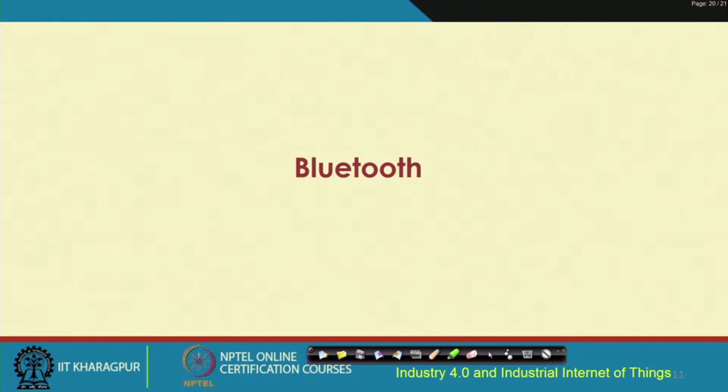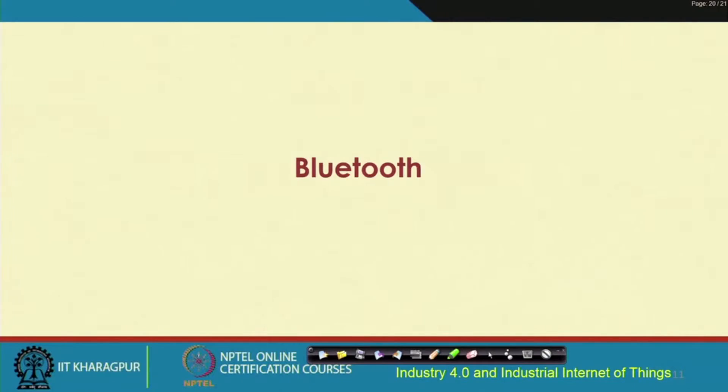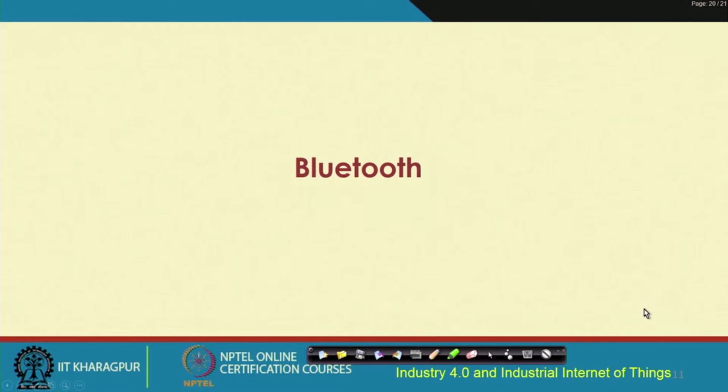Now let us look at another very interesting and popular technology for implementing IoT: Bluetooth. Bluetooth is already familiar to most people — it is used for setting up wireless networks of peripherals for computers, in headphones, mobile phones, and so on. Bluetooth is a widely used technology that can help in setting up IoT-based network systems.